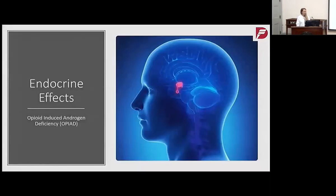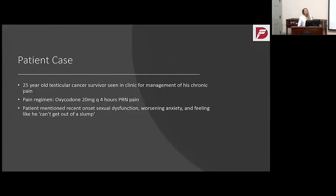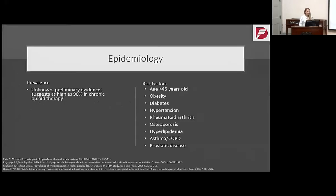Starting off with endocrine effects — let's start with a patient case. We have a 25-year-old testicular cancer survivor seen in clinic for management of his chronic pain. Currently, he has three years no evidence of disease. He had a single orchiectomy and is currently on oxycodone 20 milligrams every four hours as needed for residual chemotherapy-related neurotoxicity as well as deconditioning. Recently, he's been mentioning sexual dysfunction that he didn't even have during his treatment, worsening anxiety, and feeling like he can't get out of a slump.